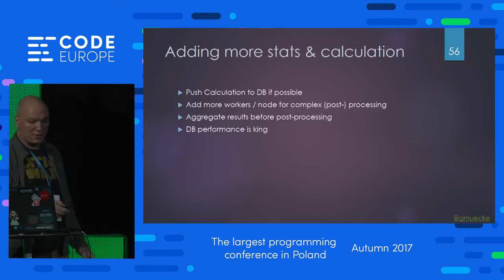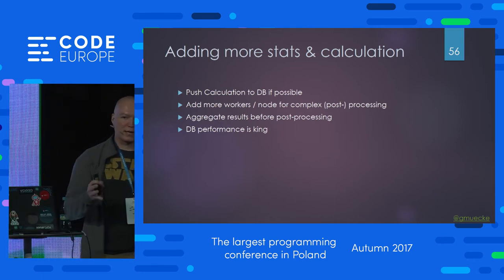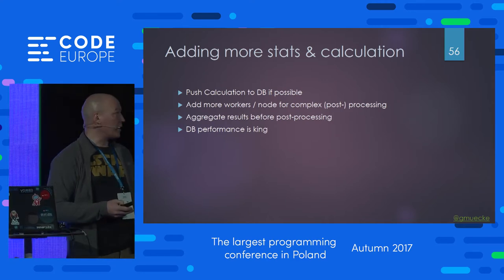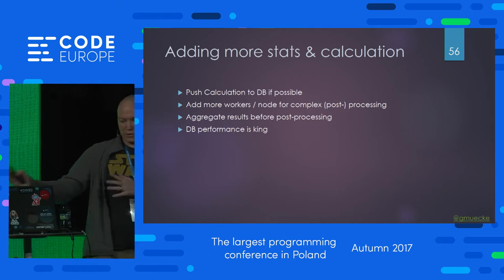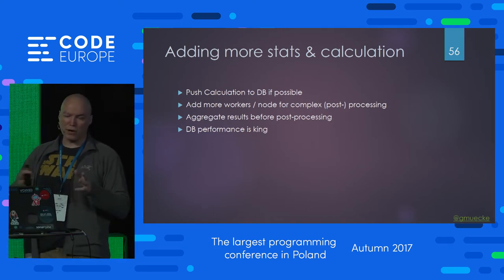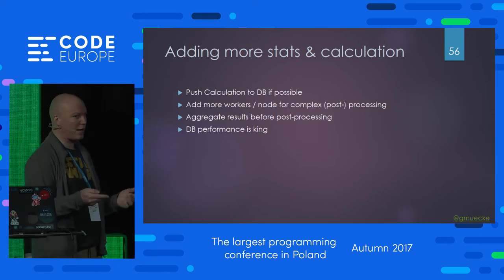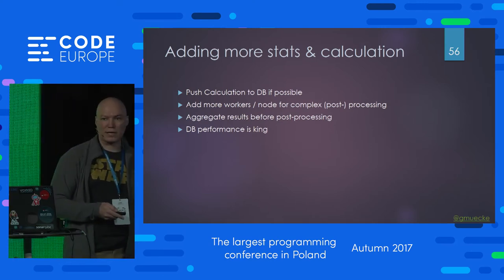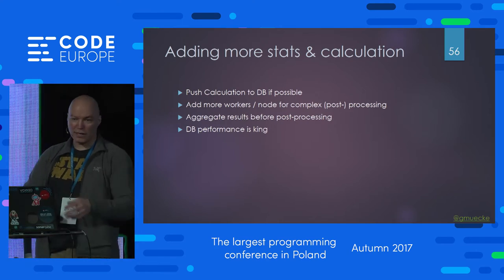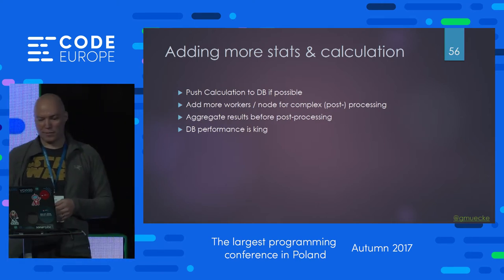Some advice: try to push calculations to the database if possible, because it limits the amount of data transmitted and makes things much faster. You can add more worker nodes or additional virtual machines for more complex post-processing. Try to aggregate results before doing post-processing. These are all strategies to limit the amount of processing and make things more reactive. And of course, you need a strong database server — my bottleneck here is running MongoDB locally; with a cluster and several shards it would be much faster.